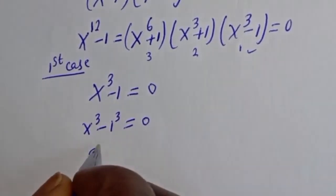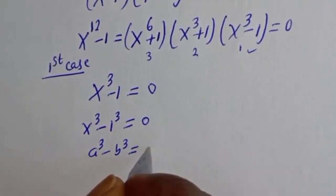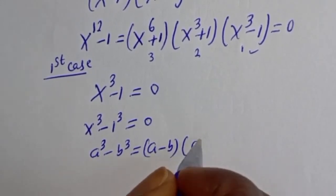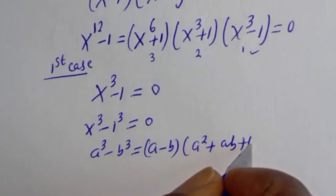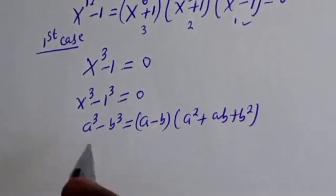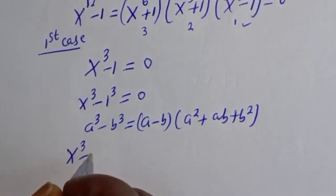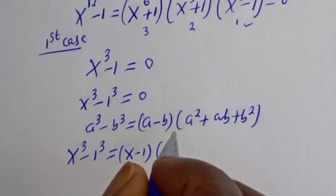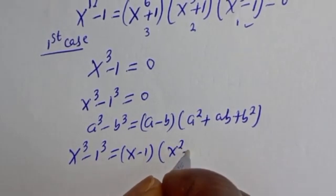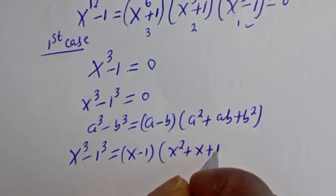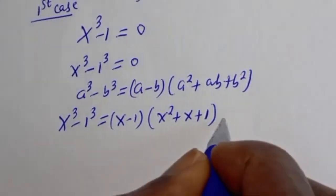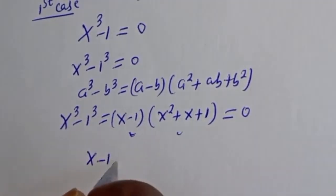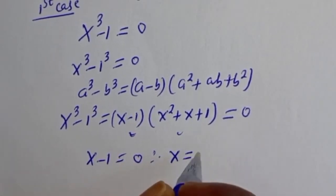If you have a raised to power 3 minus b raised to power 3, this is equal to a minus b bracket a squared plus ab plus b squared. So s cubed minus 1 factors as s minus 1 bracket s squared plus s plus 1 equal to 0. The first case gives s minus 1 is equal to 0, therefore s is equal to 1.